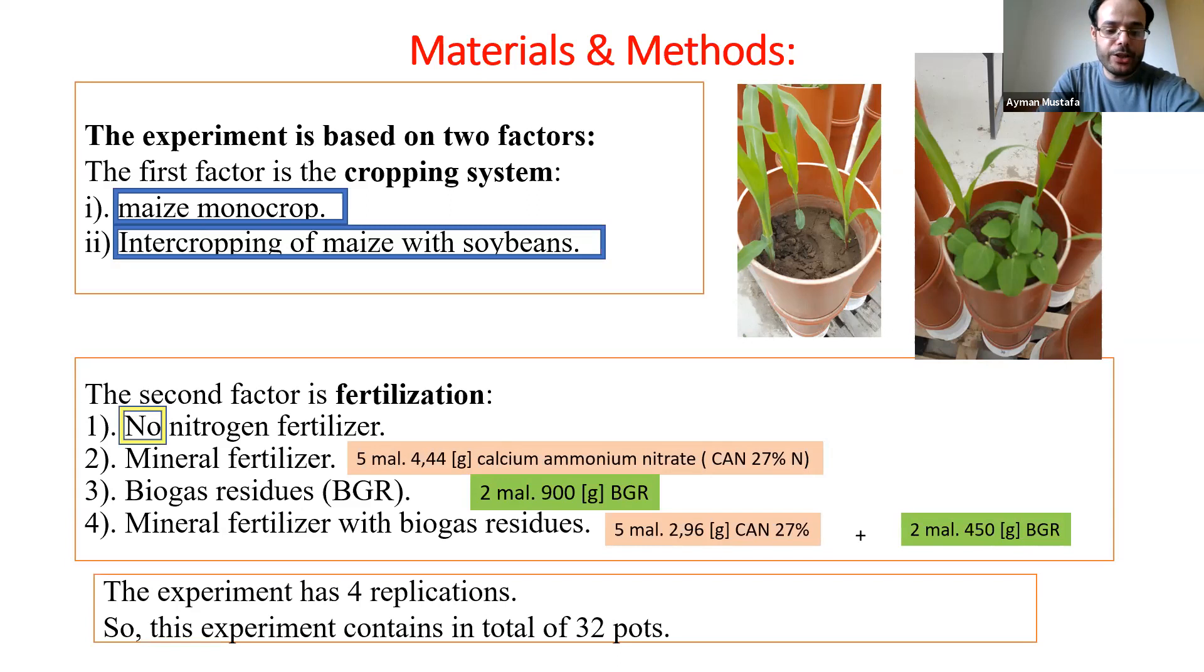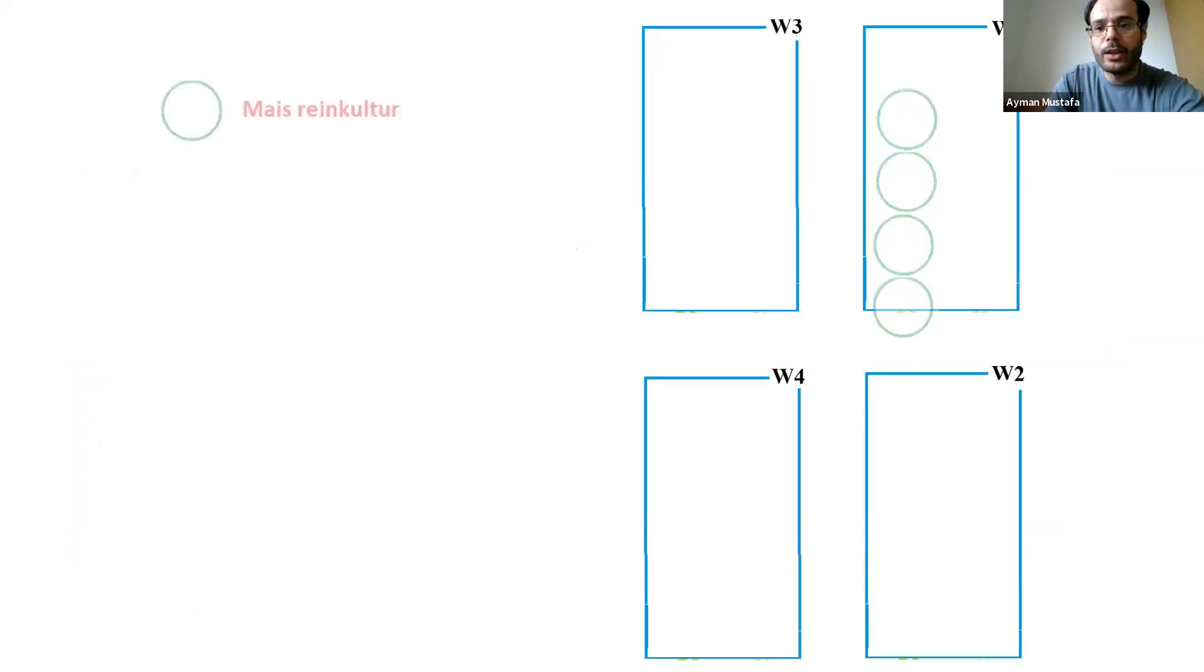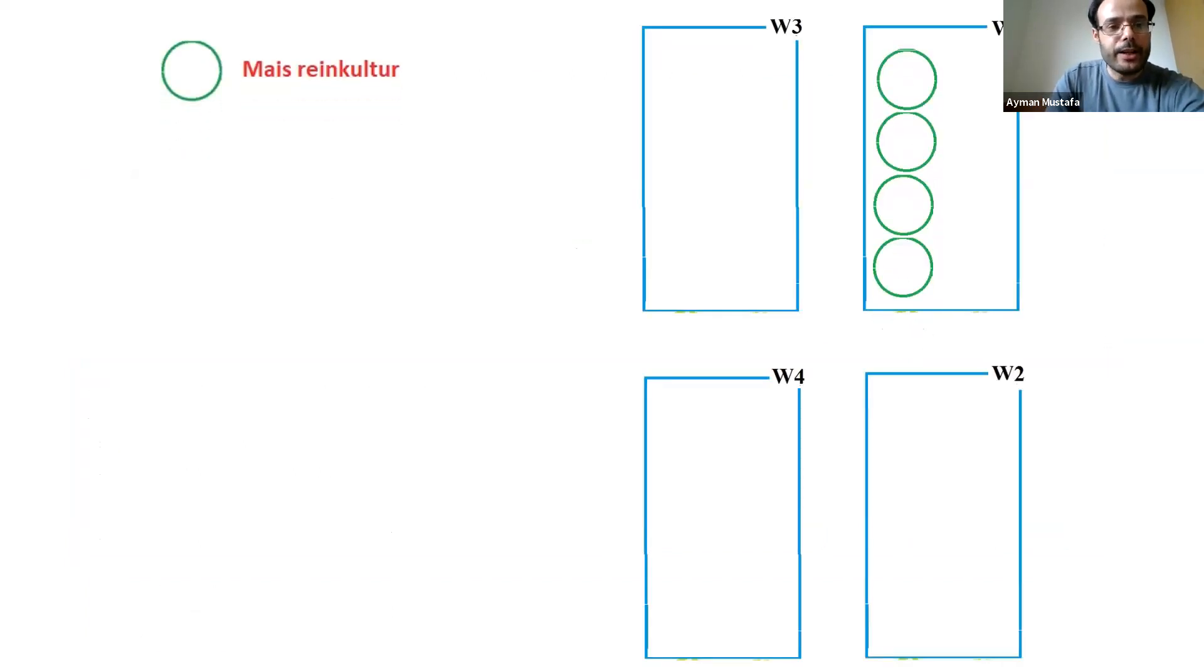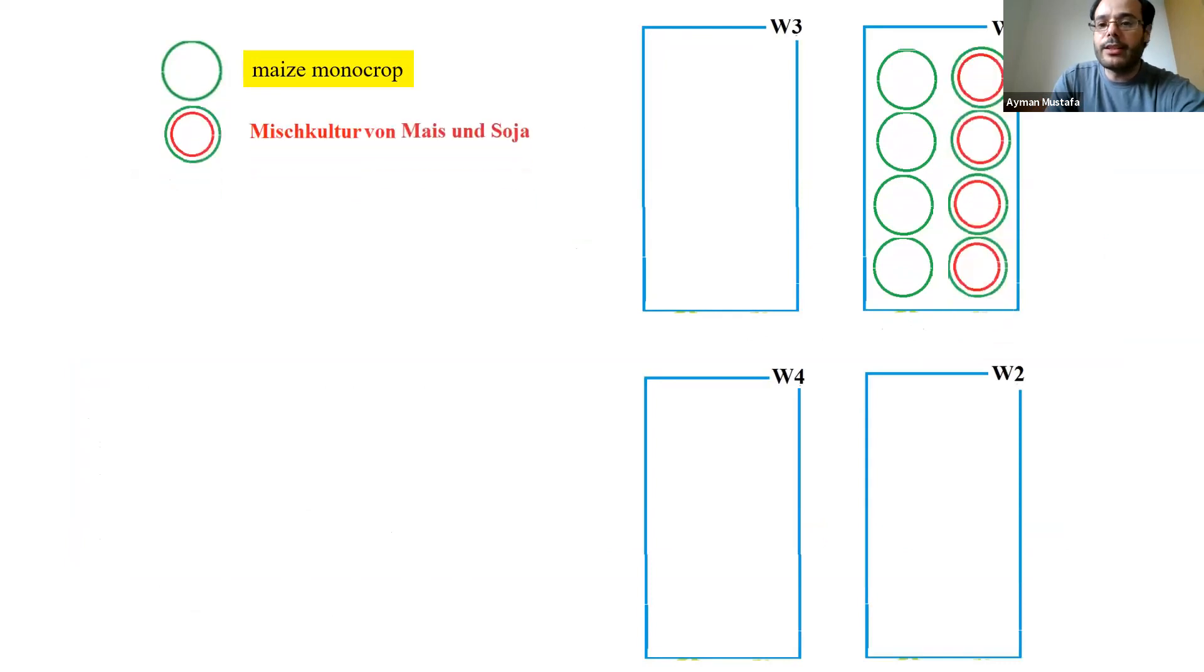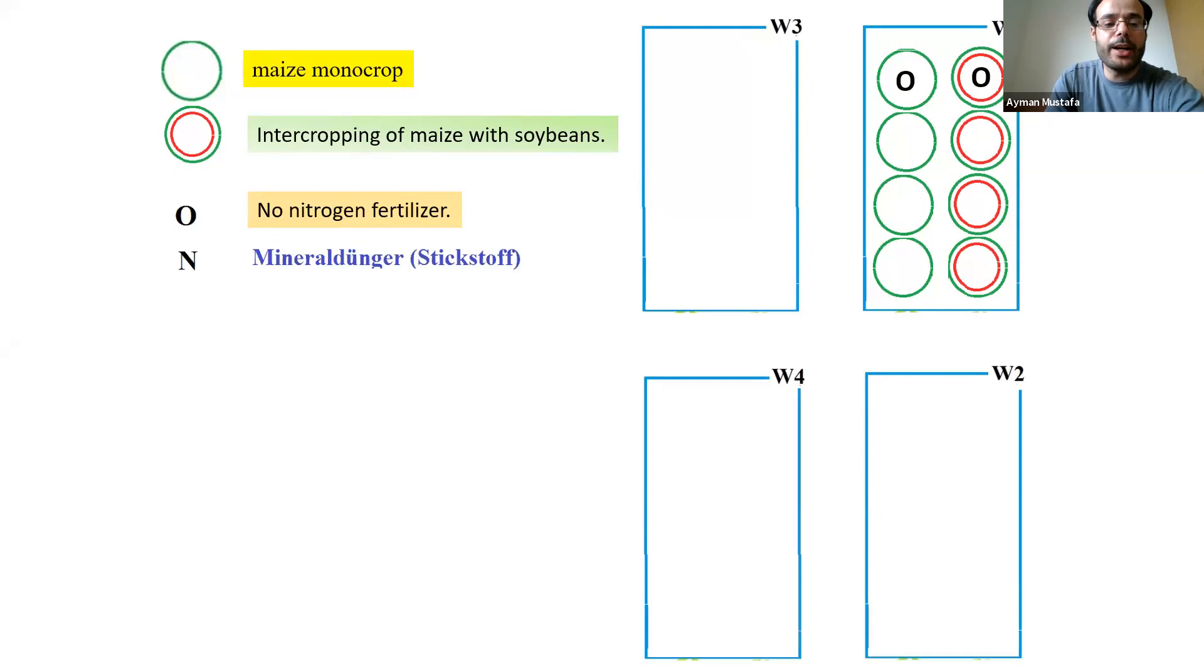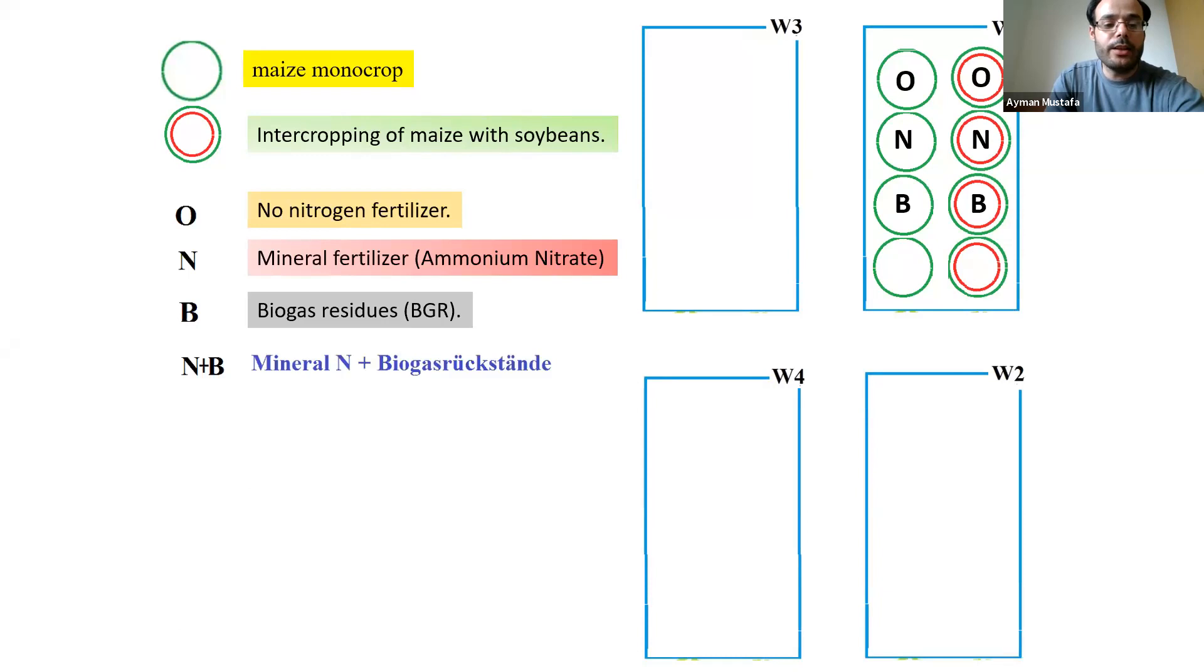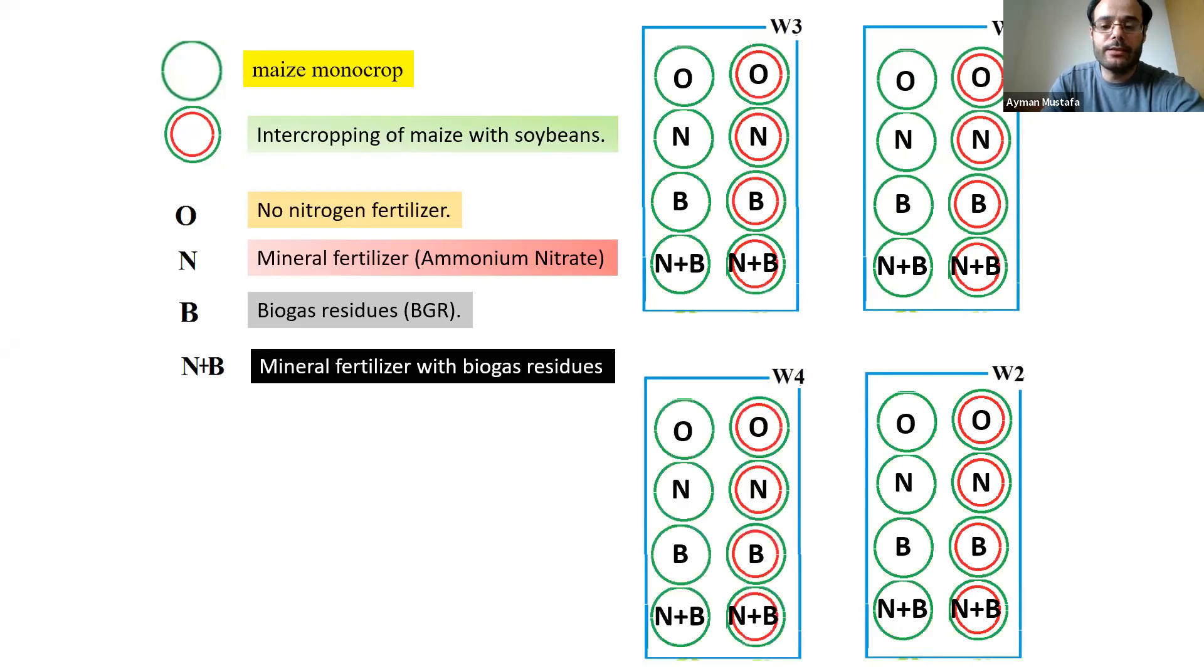We have four replications, so this experiment contains 32 pots. We have maize monoculture alone and maize intercropped with soybean, then without nitrogen or without mineral, then only with mineral, then with biogas residues, and then mineral with biogas residues. We have replicated the treatments four times.